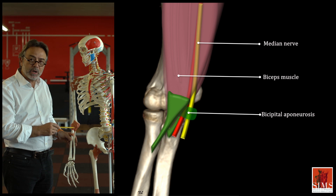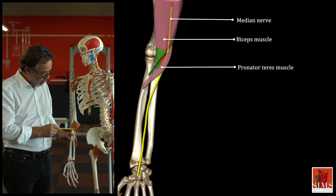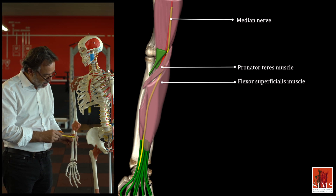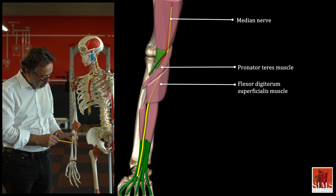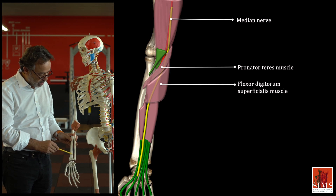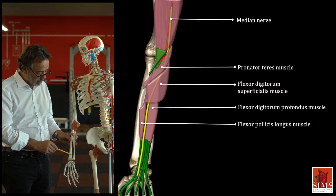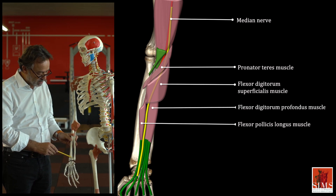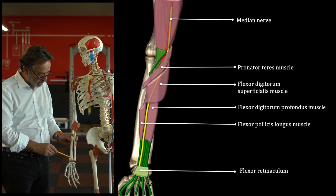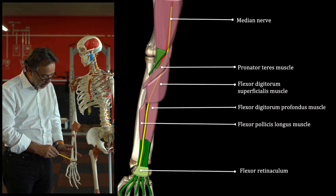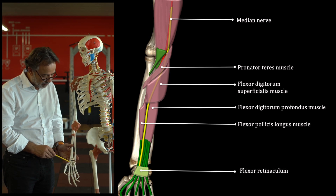In the forearm, it passes between the two heads of the pronator teres muscle, then under the flexor digitorum superficialis arch to the wrist, over a muscular hiatus between the flexor pollicis longus and the flexor digitorum profundus muscles, and then under the retinaculum of the carpal flexors between the scaphoid and pisiform bones.